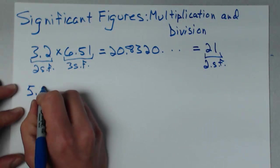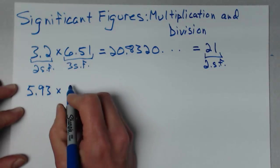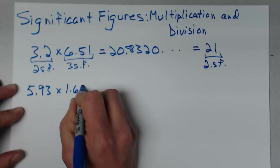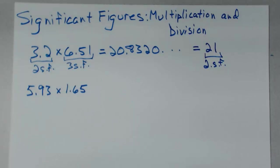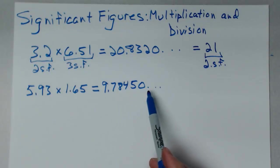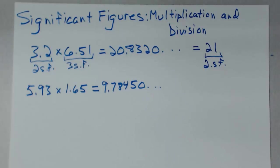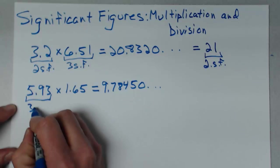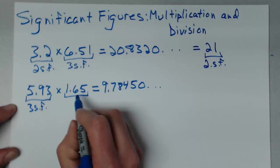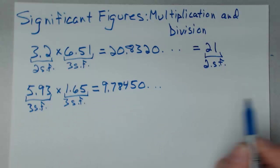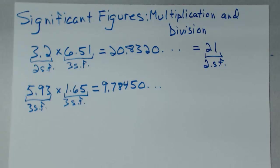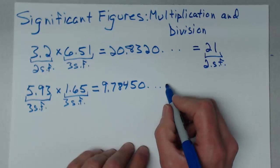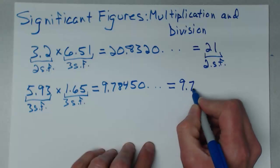Let's do another one: 5.93 times 1.65. When I do that on my calculator, the result is 9.78450 with repeating zeros. I've got three significant figures in each number — both the same — so I can keep three significant figures in the result. My result will be 9.78.